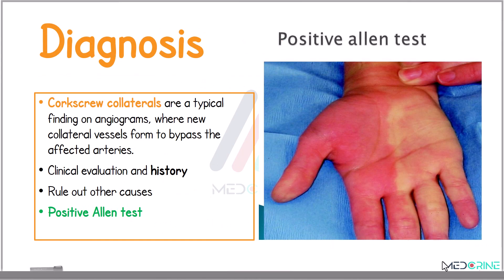A key diagnostic feature in Buerger's disease is the presence of corkscrew-shaped collateral vessels on angiography, which form to bypass the obstructed arteries. Diagnosis is primarily clinical, supported by patient history and exclusion of other potential causes. A positive Allen test can further support this diagnosis.